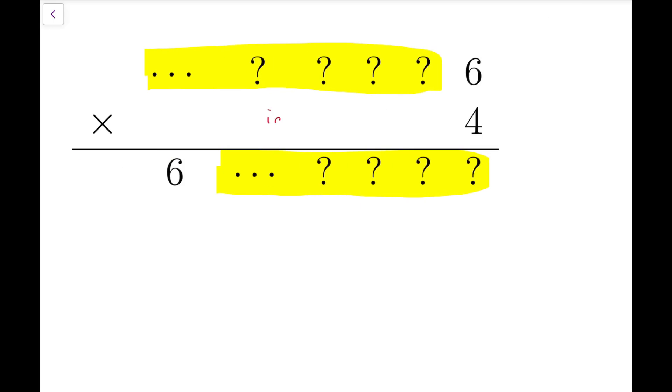In this puzzle, we are told that the two blocks of digits highlighted in yellow are identical, and if the digit 6 is placed at the right of the yellow block, then when it is multiplied by 4, it's equivalent to just moving the digit 6 to the left of the yellow block.